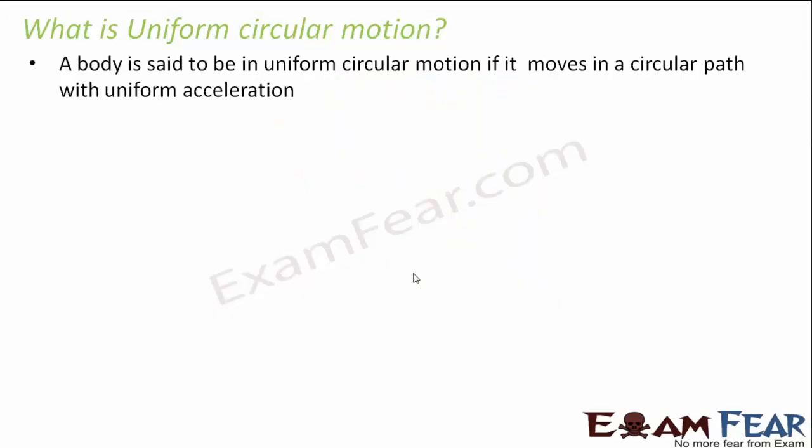A body is said to be in uniform circular motion if it moves in a circular path with uniform acceleration. So that means in circular motion the body has to move along a circular path, but when we say uniform circular motion it means the body is not only moving along a circular path but also moving with uniform acceleration.